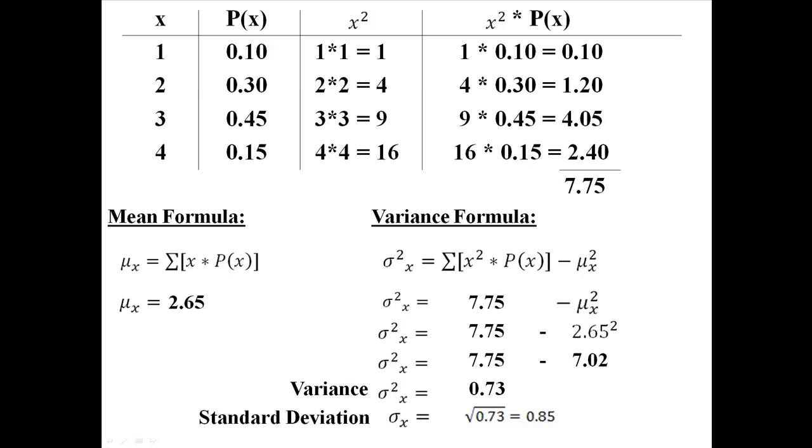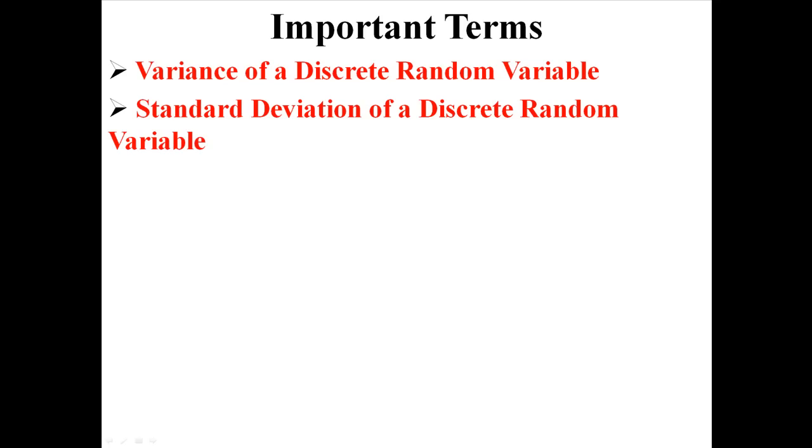Now that we have the variance, we can just take the square root of that, and now we also know that the standard deviation of this discrete random variable is 0.85. Assuming you already know how to find the mean of a discrete random variable, that's how you find the variance and the standard deviation as well.